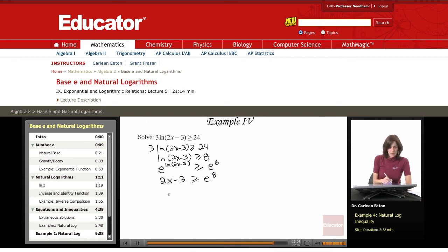Now all I have to do is solve for x. Adding 3 to both sides gives me 2x ≥ e^8 + 3, then divide both sides by 2. So x ≥ (e^8 + 3)/2.